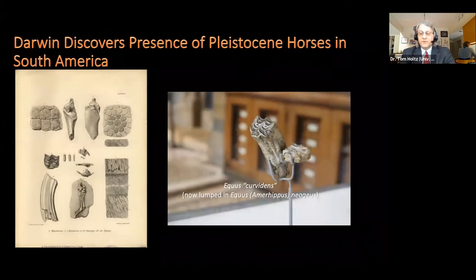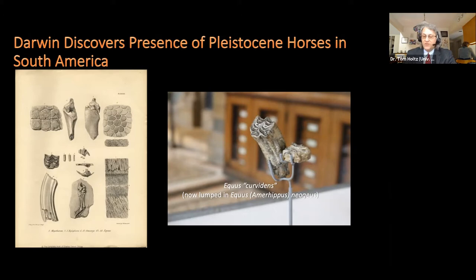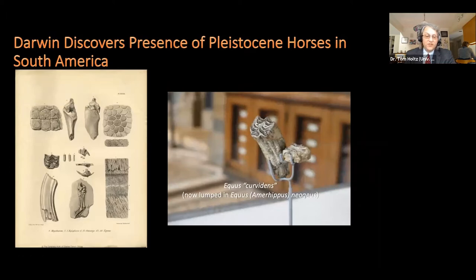Darwin also found evidence of pre-Columbian horses — specifically Pleistocene horses in South America, contemporaries of things like Glyptodon and megatherium. Here's the tooth that he found, which Owen would name Equus curvidens. It turns out it seems to belong to a previously named species of horse, Equus neogaeus, but apparently both the modern horse genus Equus and another fossil horse were living side by side in South America in the Pleistocene up until the time of the megafaunal extinction.